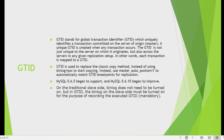Having all GTIDs the same across all servers is what makes this feature unique. It helps configure master-slave topology without needing to know the binary log position to start replication. Previously we had to identify positions in the binary log file, but with GTIDs that's no longer required. Instead of using binary log plus position, you just use master_auto_position=1 to automatically match the GTID breakpoints for replication.